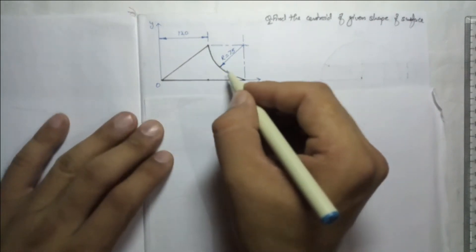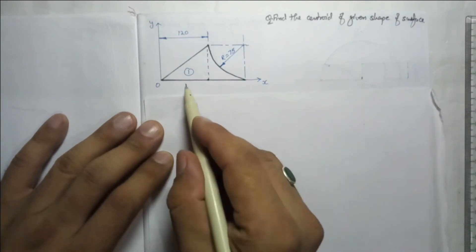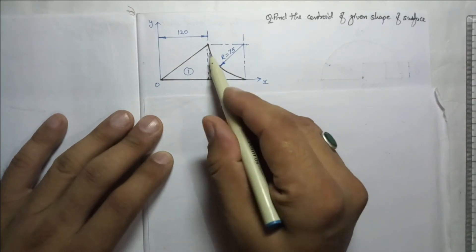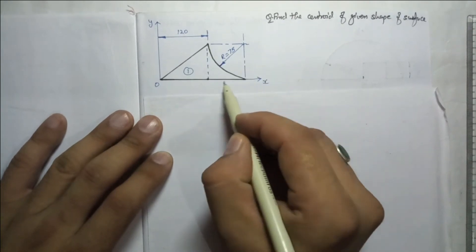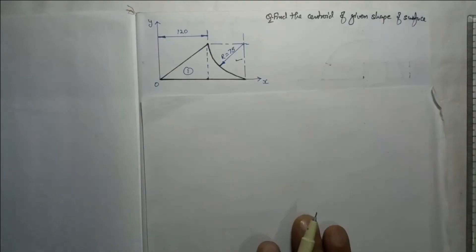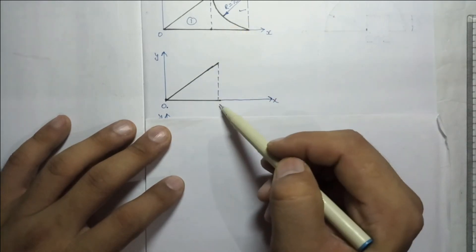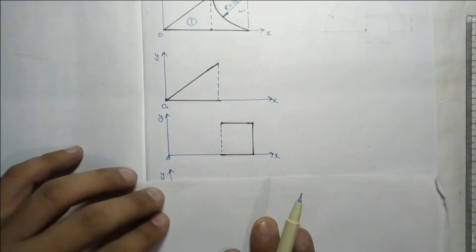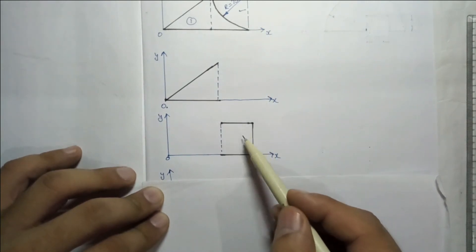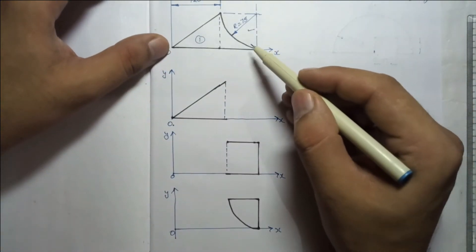To find the centroid, we have to break this shape into standard shapes. First, Area 1 is a triangle - we can find its centroid easily using right angle triangle formulas. For the curved part, we cannot use any standard shape directly. So we imagine a square and subtract the quarter circle area from it. This gives us three surfaces: the triangle, the imaginary square, and the quarter circle to be subtracted.